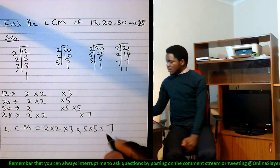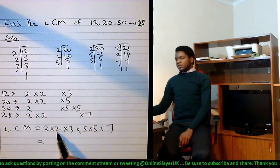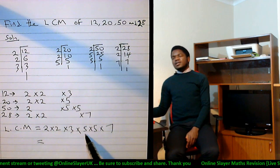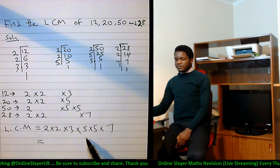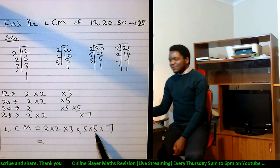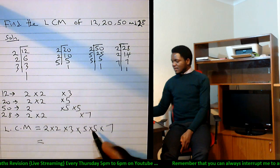LCM therefore is a multiplication of all of this: two times two, four. Four times three, twelve. Twelve times five, sixty.